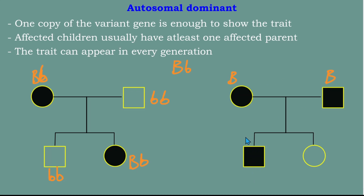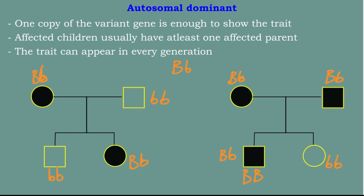So in this pedigree the trait is shown in the mother and one of her children. The mother is heterozygous (Bb), the father is homozygous recessive (bb), the daughter is heterozygous (Bb), and the son is homozygous recessive (bb). The daughter got one recessive allele from her mother and one from her father. This is how we interpret an autosomal dominant pedigree.